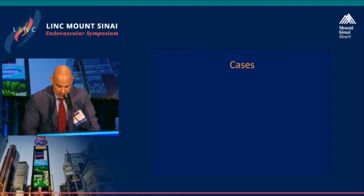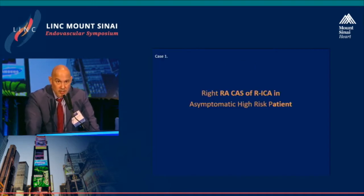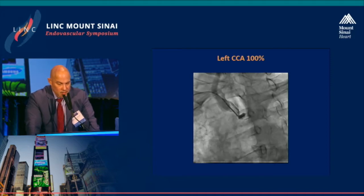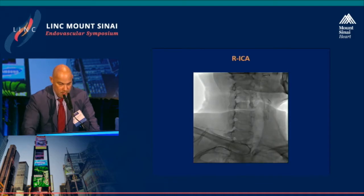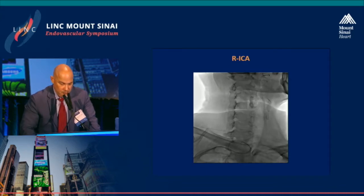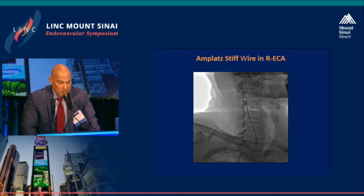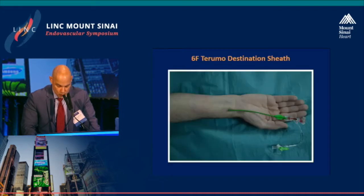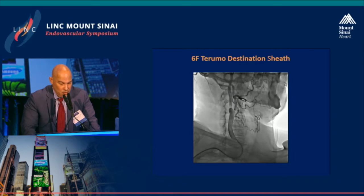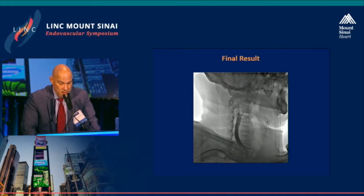The first case is a right radial artery carotid stenting of the right internal carotid in an asymptomatic high-risk patient. The left carotid is completely occluded, and the right has a very severe proximal ostial lesion. We advance a steerable wire and catheter into the external carotid, exchange for a stiff wire such as an Amplatz or stroke wire, and then advance a sheath — in this case a TRUMAX destination sheath — up to the distal common carotid. We then advance a wire and filter, a distal protection device, and the stent is deployed.